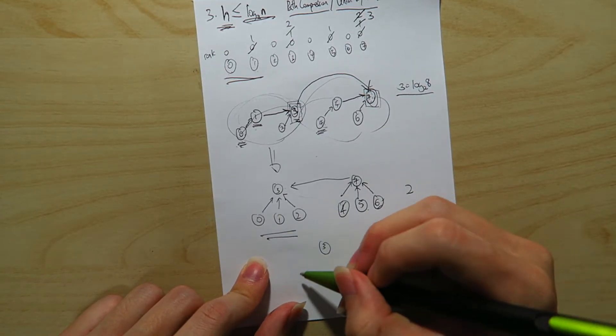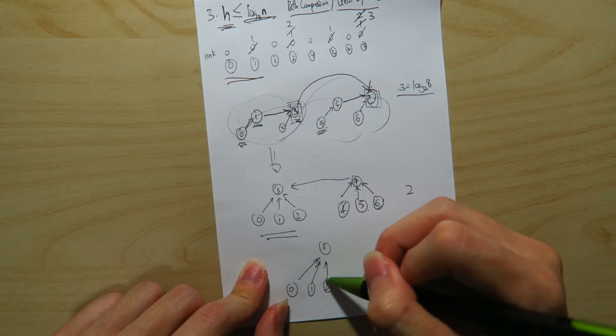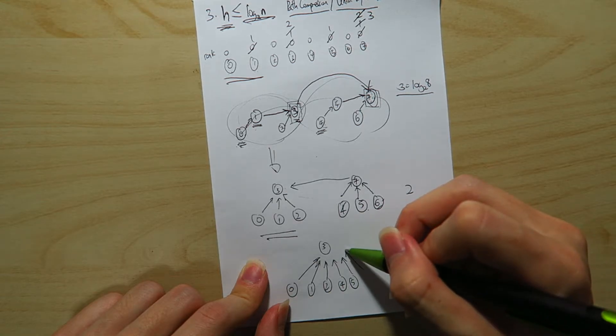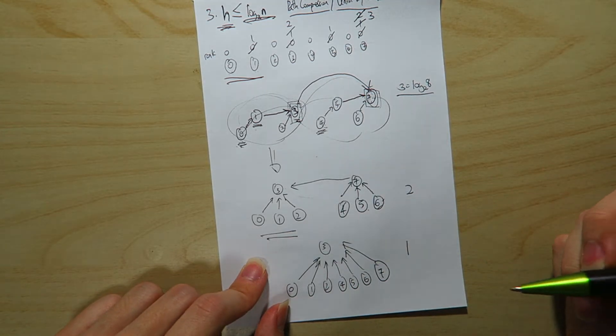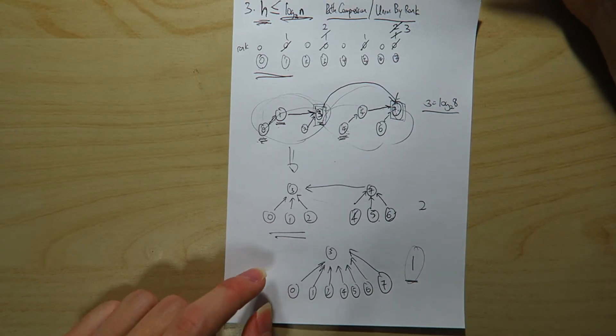find set 4, find set 5, find set 6, eventually what we're going to get is 0, 1, 2, 4, 5, 6, 7, right? And now the height of the tree becomes 1, right?